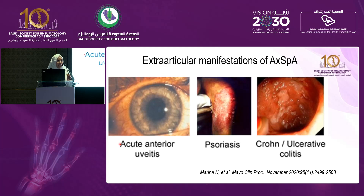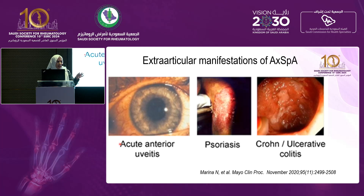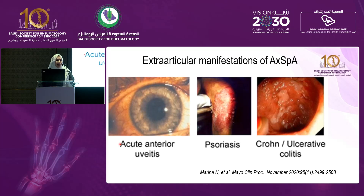The most common extra-articular manifestation of axial spondyloarthritis is acute anterior uveitis, which occurs as acute pain with a red eye, sometimes disturbing vision, and can be bilateral or unilateral. It can subside by itself but commonly requires steroids. These patients will go to an ophthalmologist who may not ask about back pain, and the condition may simply be diagnosed as uveitis. Other manifestations include inflammatory bowel disease — Crohn's or ulcerative colitis — and 50% of patients with axial spondyloarthritis can have microscopic colitis.